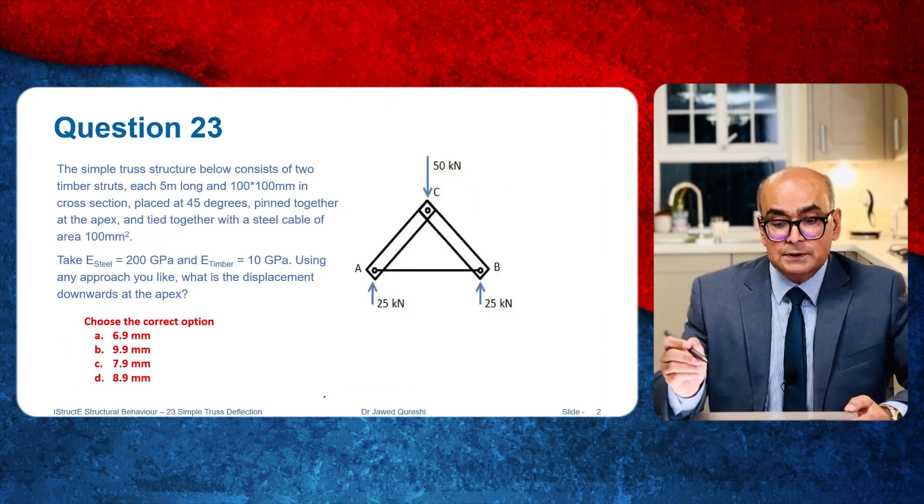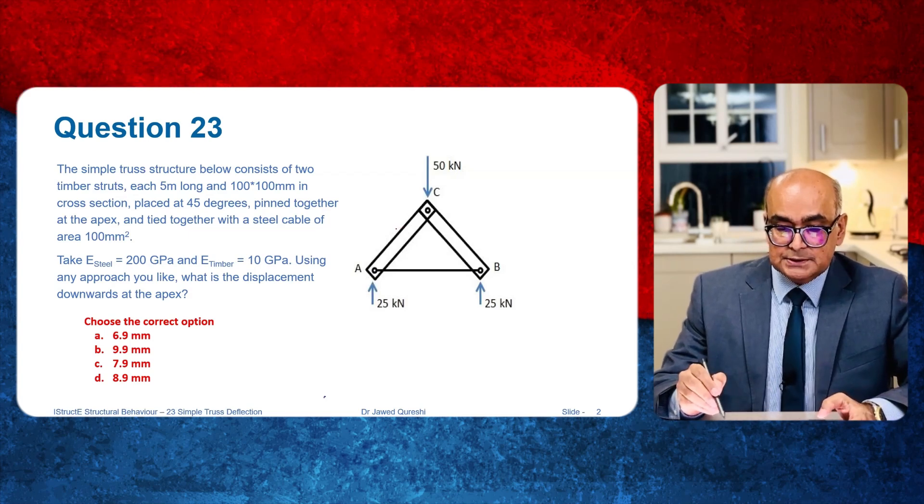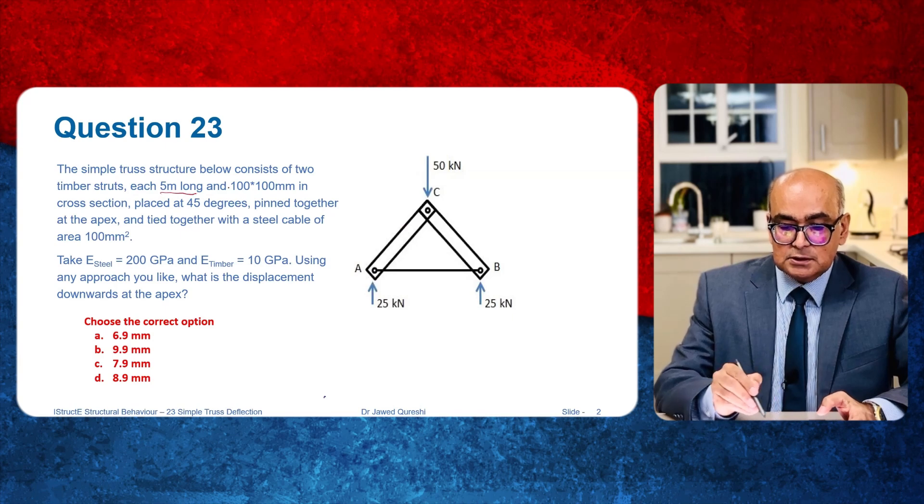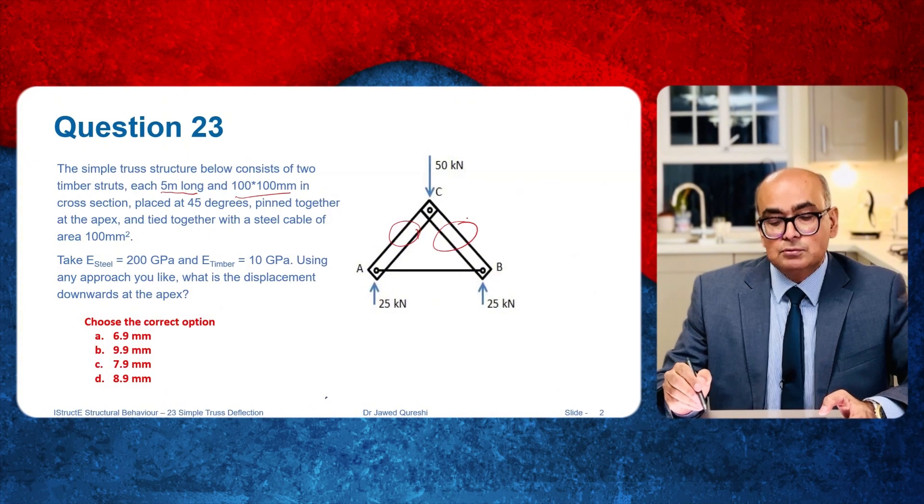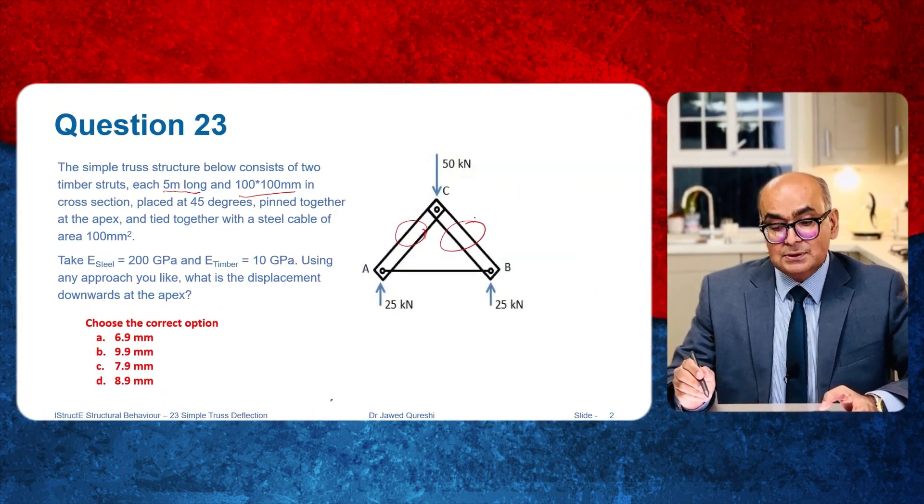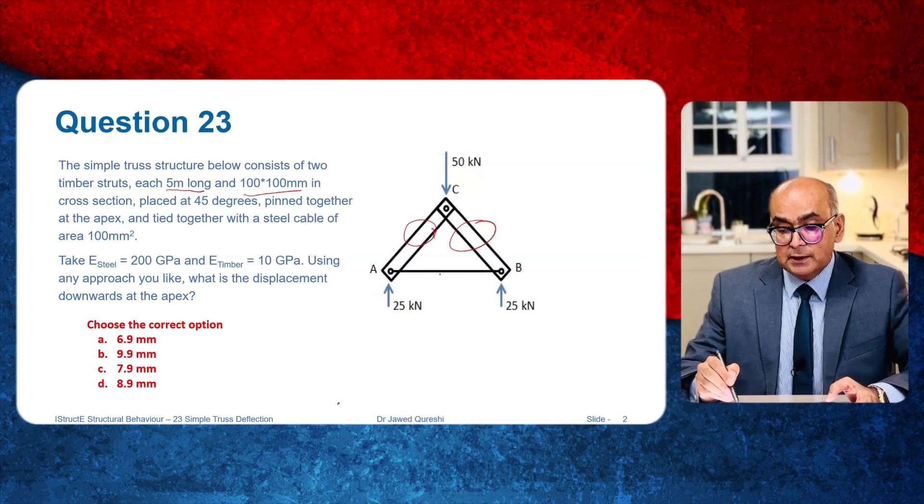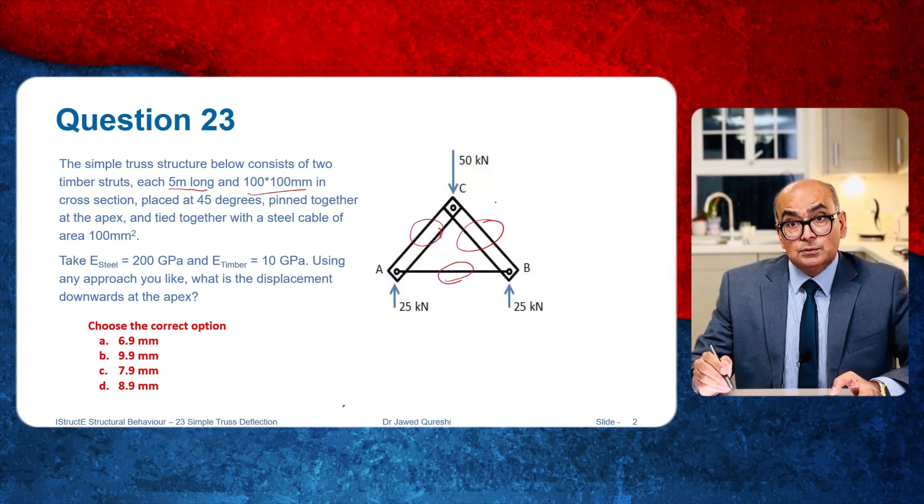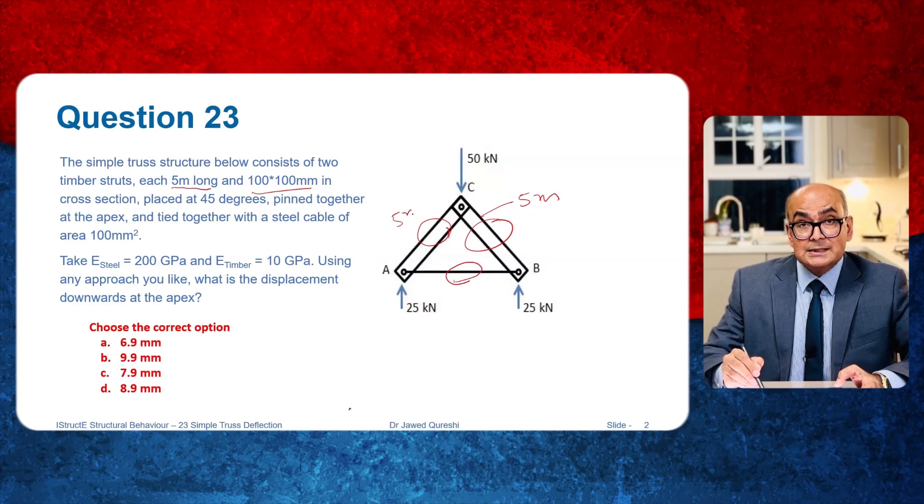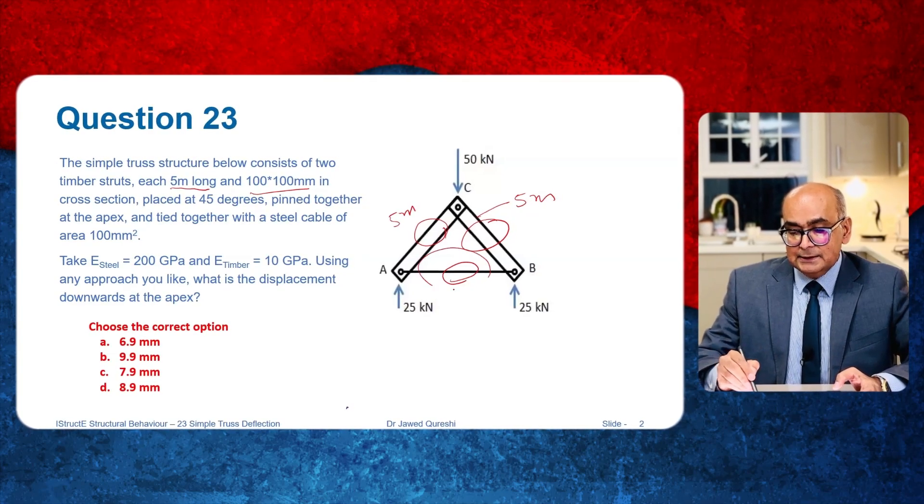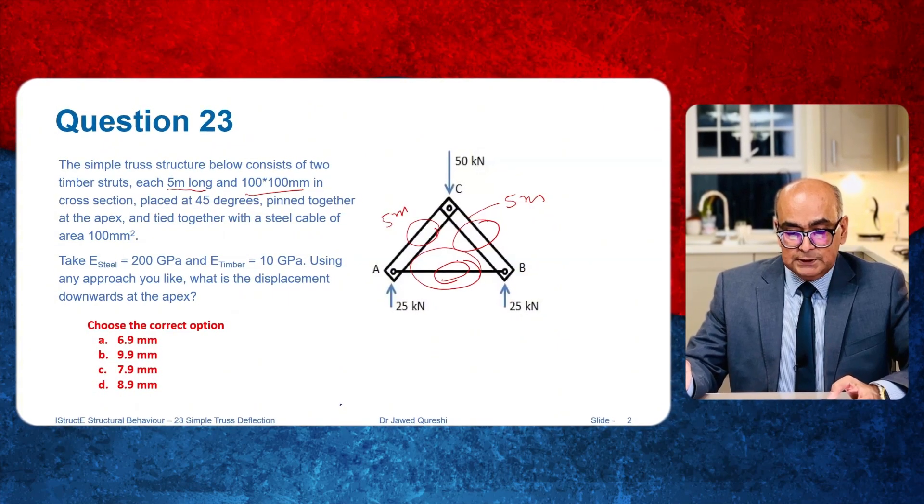This is a problem which I want to solve today. It is a three-member truss. It's got two timber struts, five meters long and 100 by 100 millimeter in cross section. These are two timber struts and they are connected to a steel cable which is 100 millimeter square area. The length of two struts is given and length of the cable is not given. They are inclined at 45 degrees.